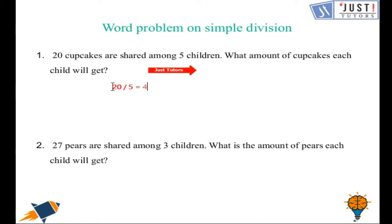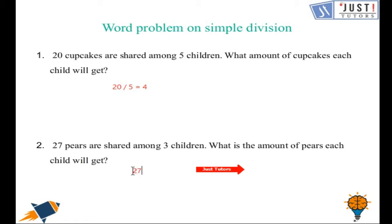Now let's have a look at the second question. Here we have twenty-seven pears shared among three children. What is the amount of pears each child will get? We need to divide the number of pears by the number of children, and we get nine pears each.